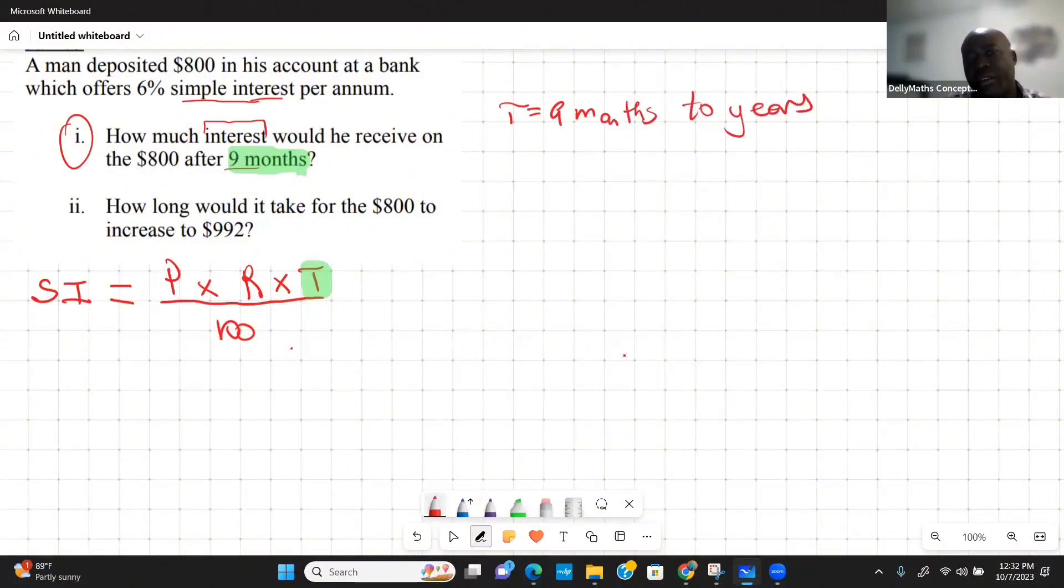So nine months to years could be written as 9 over 12 if you want, or you could break it down because 9 over 12 is the same thing as 0.75 years. So we could plug 0.75 here as the year, or we could represent it as 9 over 12. I'm going to use the 0.75.